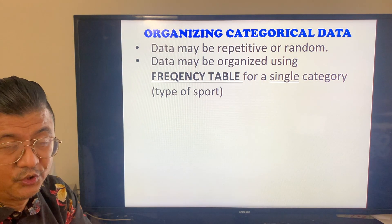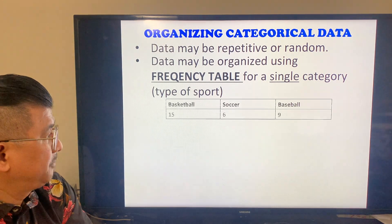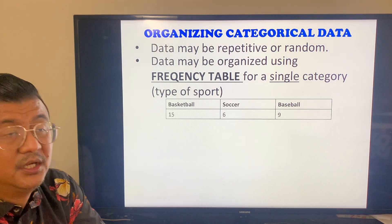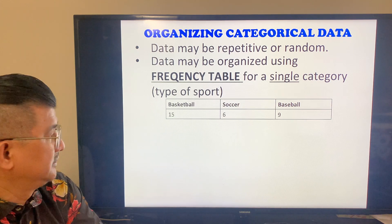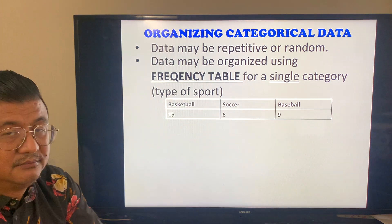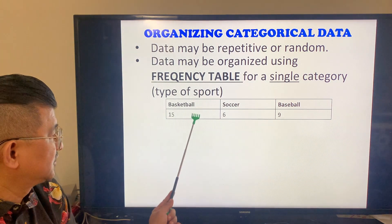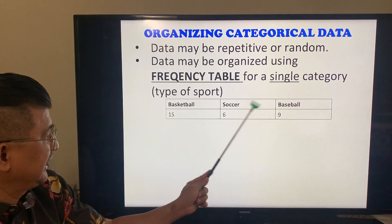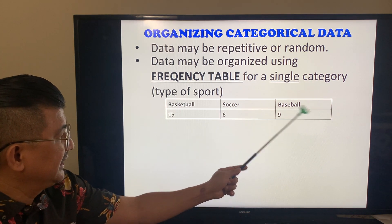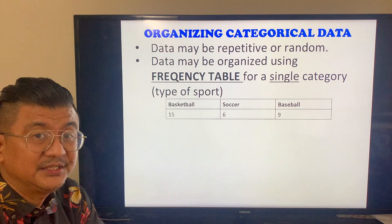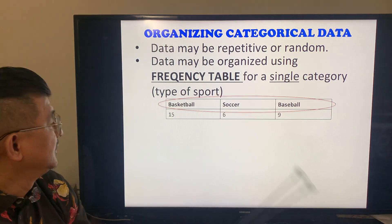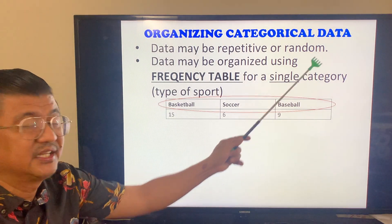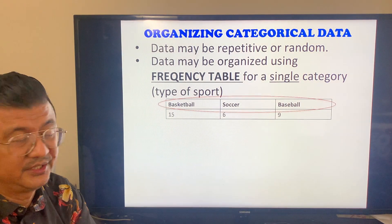Data may be organized using a frequency table for a single category. For example, the type of sport. I asked a group of students, 'What's your favorite sport?' And 15 answered basketball, 6 answered soccer, and 9 answered baseball. There is only one category here. That's why it's called single category.